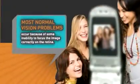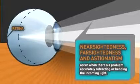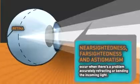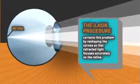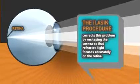Most normal vision problems occur because of some inability to focus the image on the retina. Nearsightedness, farsightedness, and astigmatism occur when there's a problem accurately refracting or bending the incoming light. The iLASIK procedure corrects this problem by reshaping the cornea so that refracted light focuses accurately on the retina.